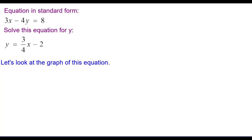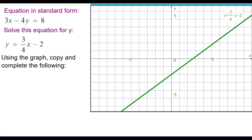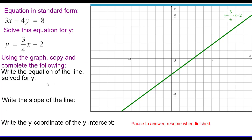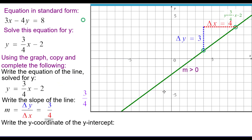We're going to go ahead and graph it for you. Using the graph, copy and complete the following questions. The equation solved for y is y equals 3 fourths x minus 2. The line slants uphill, so the slope is a positive number — change in y of 3 for every change of x of 4 gives positive 3 fourths. The y-intercept crosses the y-axis at (0, negative 2), so the y-coordinate of the y-intercept is negative 2.